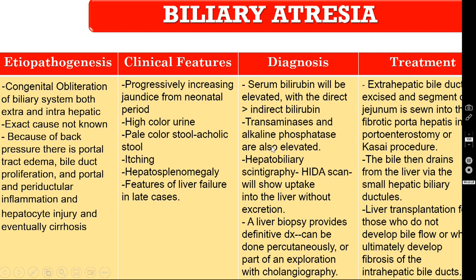I am going to use a tabular column to discuss the main points of all these causes. Number one is biliary atresia. The etiopathogenesis is congenital obliteration of the biliary system — both extra- and intrahepatic biliary radicals. The exact cause is idiopathic. Due to back pressure of bile, there is portal tract edema, bile duct proliferation, and portal and periductal inflammation causing hepatocyte injury, and eventually these livers go into cirrhosis.